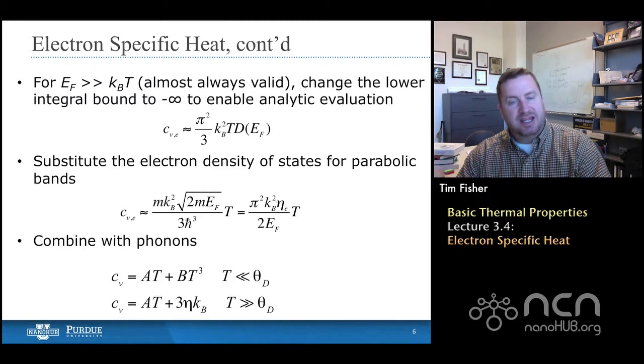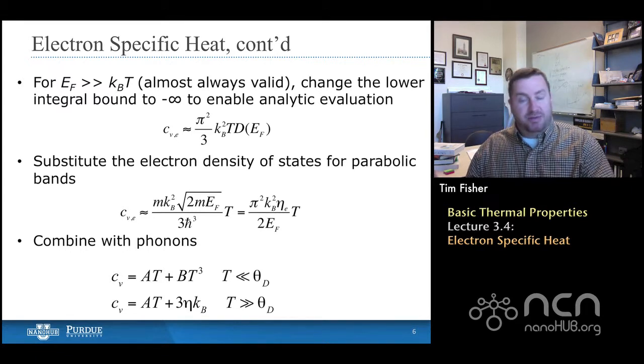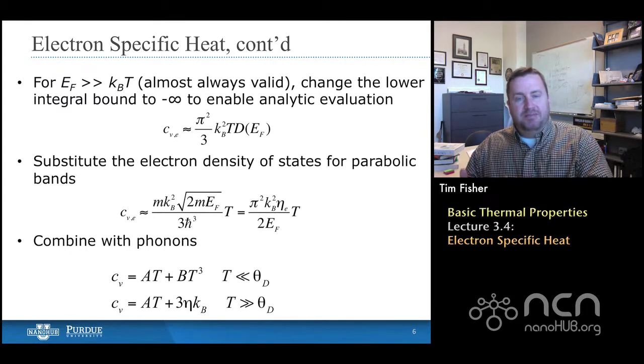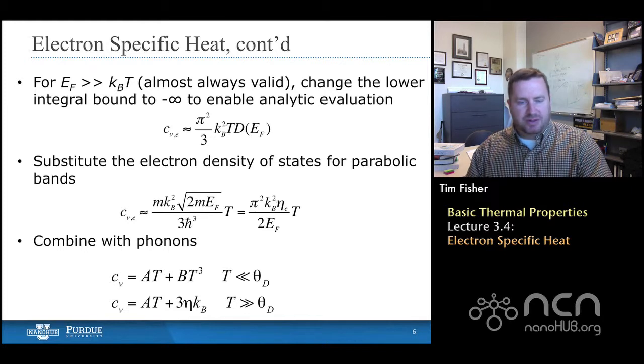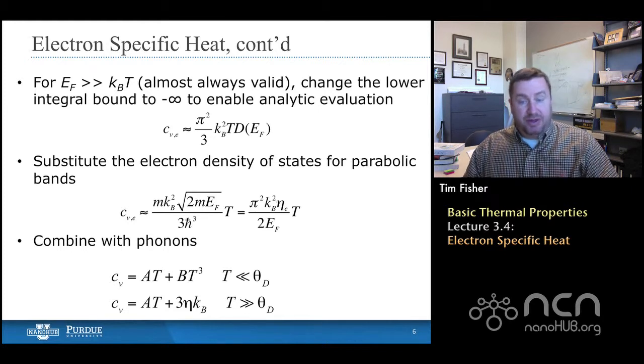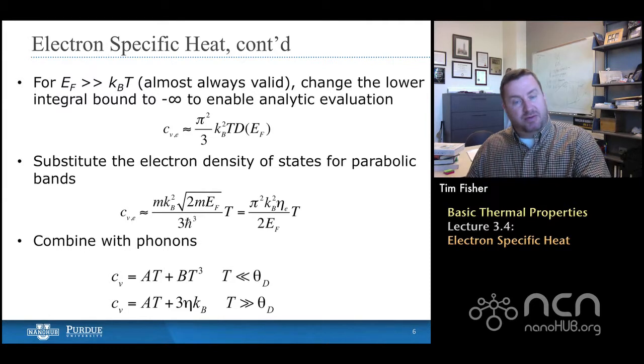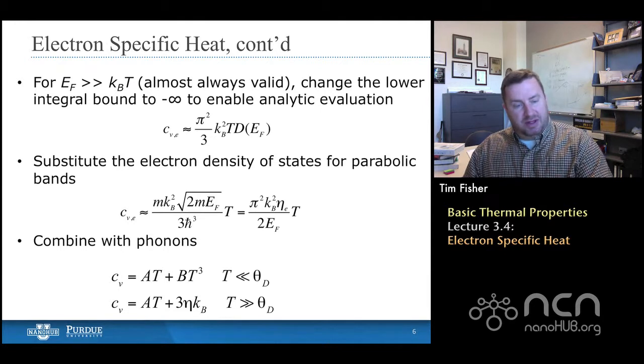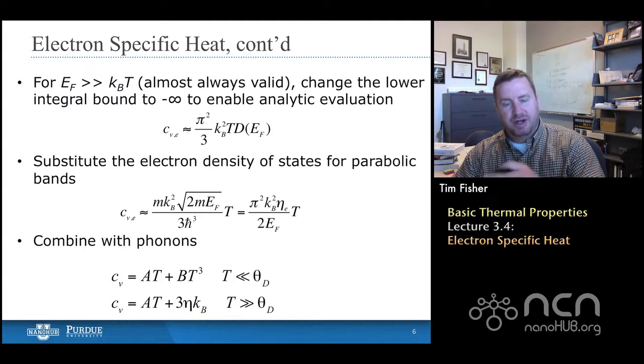And then, everything else in this equation is a constant of sorts. Of course, we have Boltzmann's constant, but also the density of states. Now, normally when we talk about density of states, it's a variable that depends on energy. In this case, it's the density of states evaluated at the Fermi energy. So that's a very important point that is sometimes missed when students start to do these calculations. The other thing that we can do is to express this, not in terms of the Fermi energy, but rather in terms of that factor that we introduced at the beginning of the lecture, that is the electron density, that's eta sub E. And so then the second row of equations here makes those calculations. Again, it's proportional to temperature, and now this collection of constants includes the electron density.